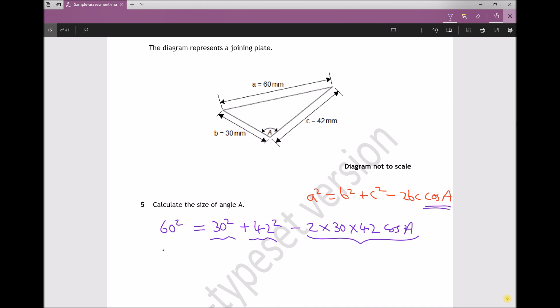So rewriting this, I get 60 squared minus 30 squared minus 42 squared equals, and I'm going to multiply out my 2 times 30 times 42, so I get minus 2520 cos A.